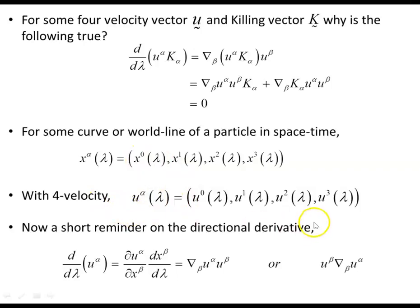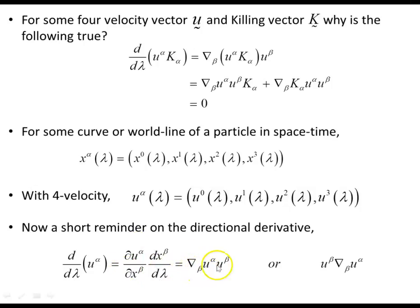A short reminder on the directional derivative: taking the total derivative of the four-velocity components, the chain rule gives du^α/dx^β · dx^β/dλ. This part dx^β/dλ is the tangent vector to the curve, which we call u^β. Generalizing to the whole manifold gives the covariant derivative ∇_β u^α, often written compactly as u^β ∇_β u^α, with one beta up and one beta down.